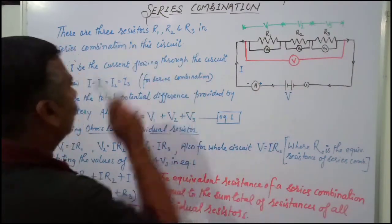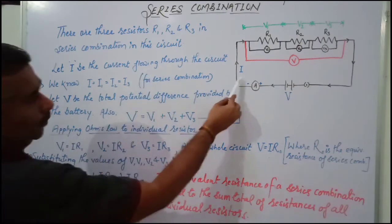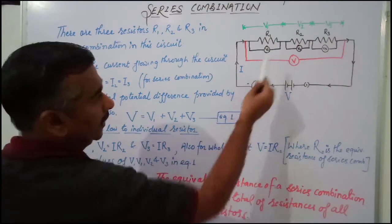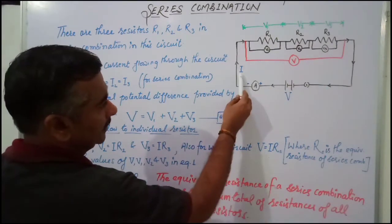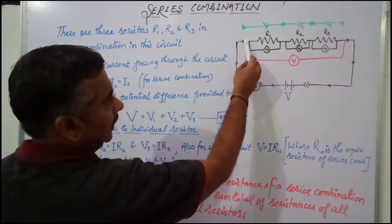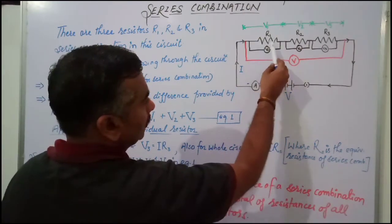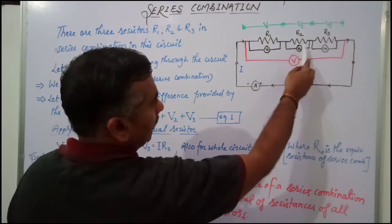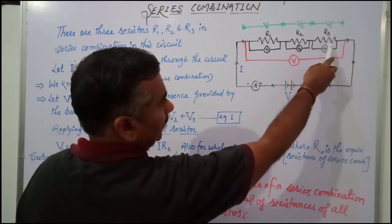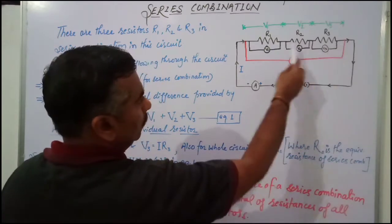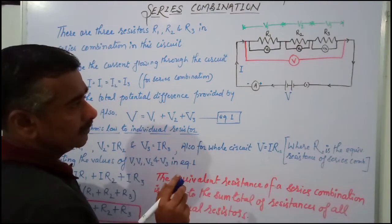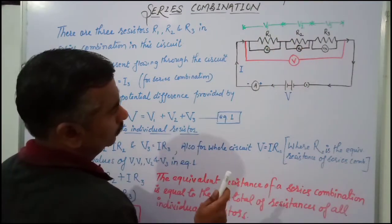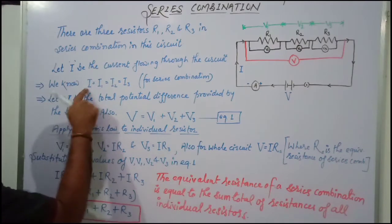Let I be the current flowing through the circuit. We also know that there is a single value of current in a series combination, because this current I will pass through R1, then once again pass through R2, and ultimately pass through R3. The same amount of current flows through all the resistors in a series combination because there is no other path for the current.